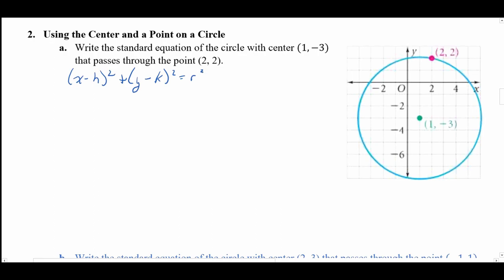We have the center, so we know h = 1 and k = −3. They also gave us a point (2, 2), which represents x and y at that particular point on the circle. That means the thing we're calculating for is r² — we're looking for the radius.